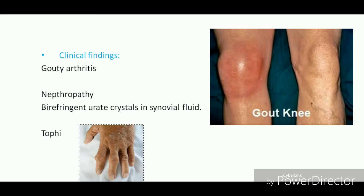The clinical findings of gout include gouty arthritis, with accumulation of uric acid crystals in the synovial fluid, and nephropathy, where uric acid accumulates in the nephrons and damages them. There is also accumulation of uric acid in the proximal interphalangeal joints. These are the important clinical findings seen in gout, as you can see.